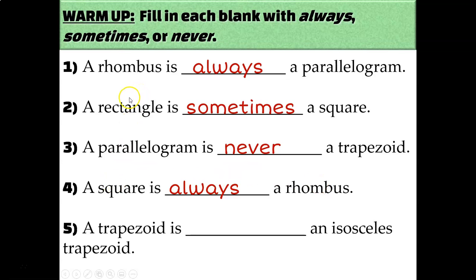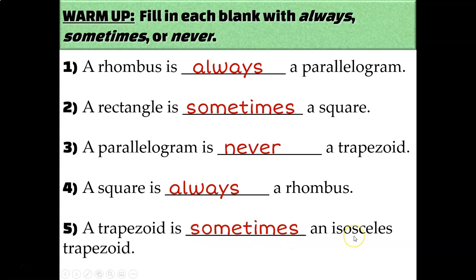Just like what we saw in number two, a rectangle is sometimes a square, but a square is always a rectangle. And a trapezoid is sometimes an isosceles trapezoid — sometimes it has those two sides that are congruent, and sometimes it doesn't.